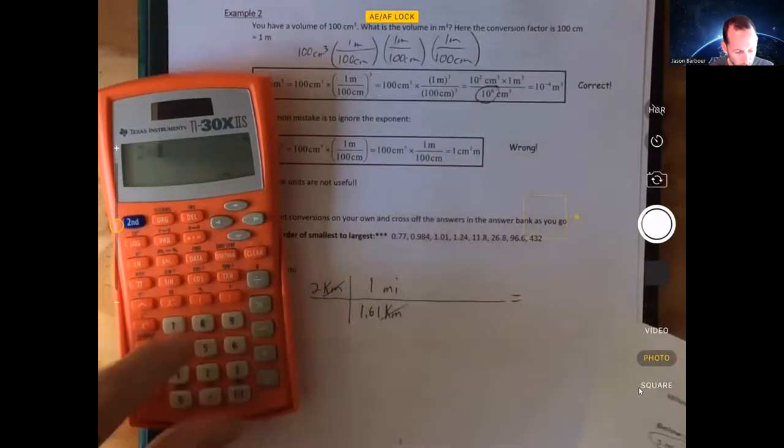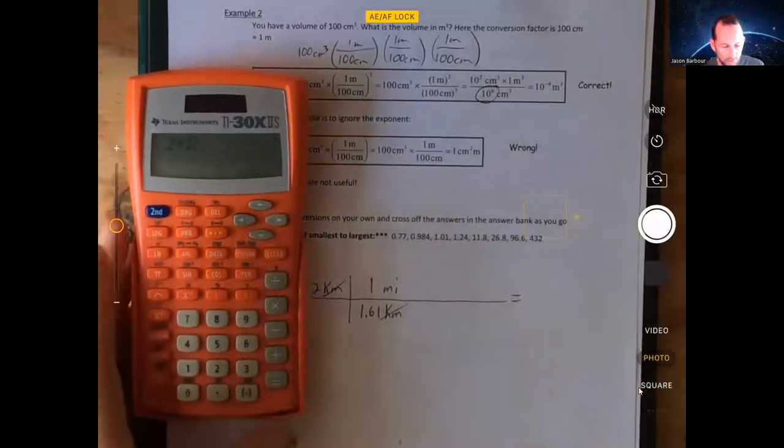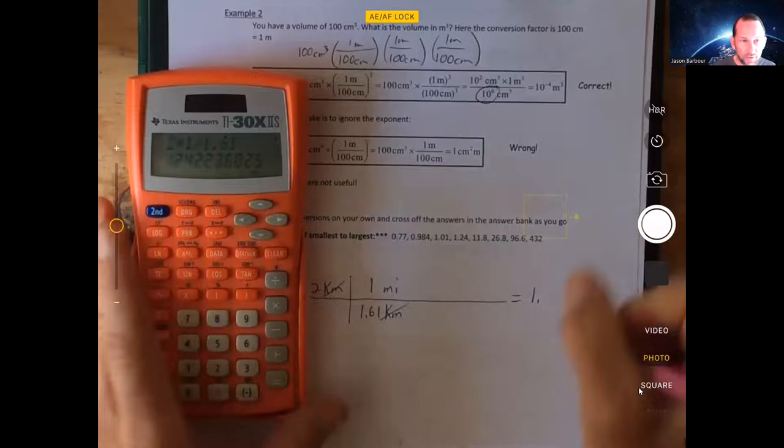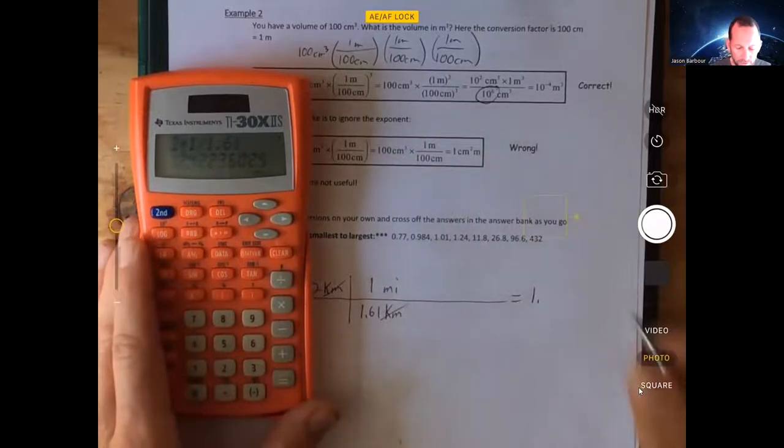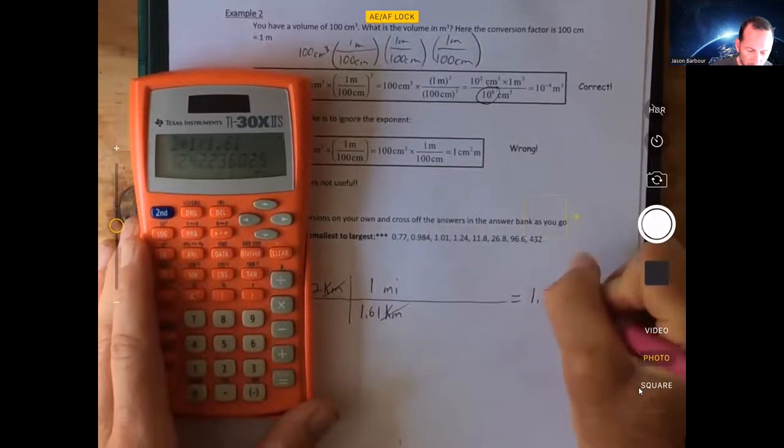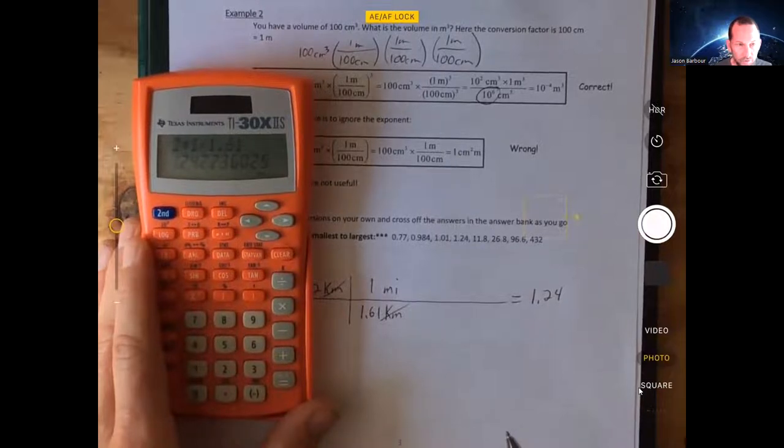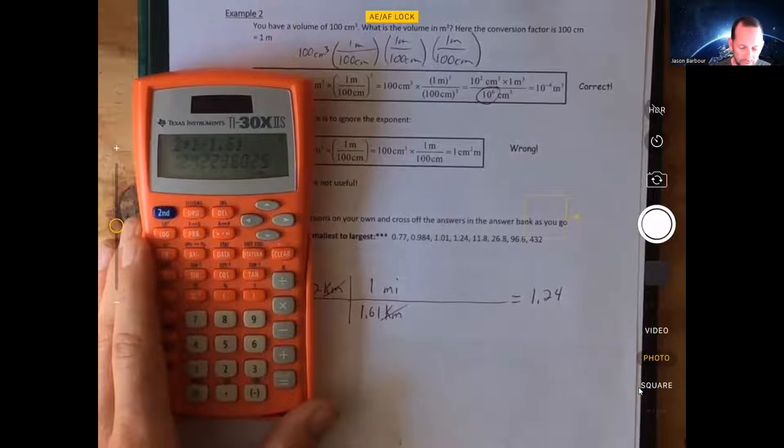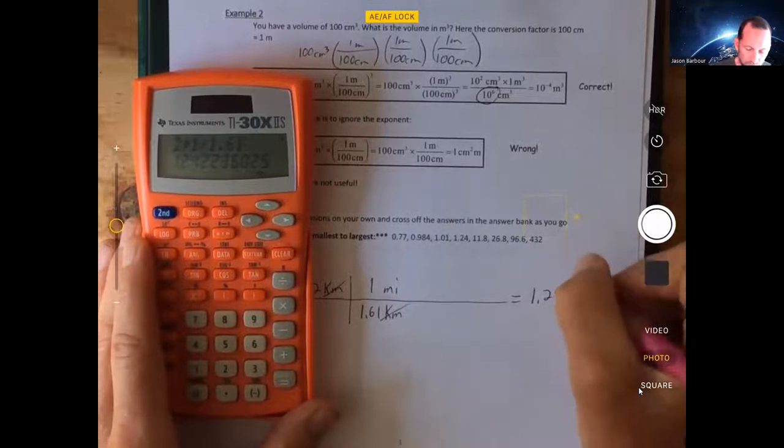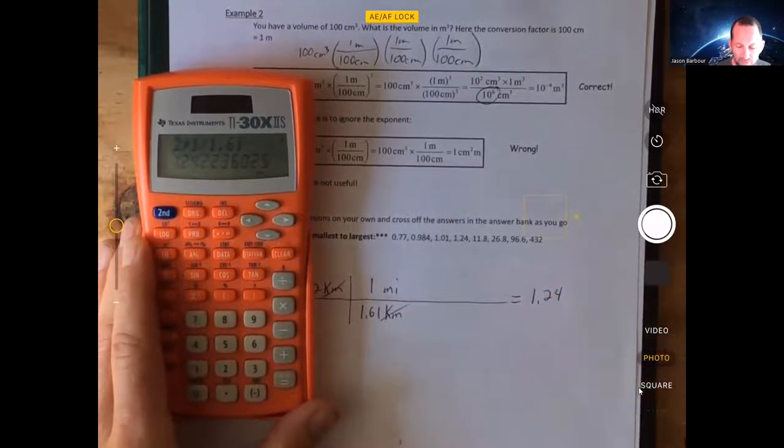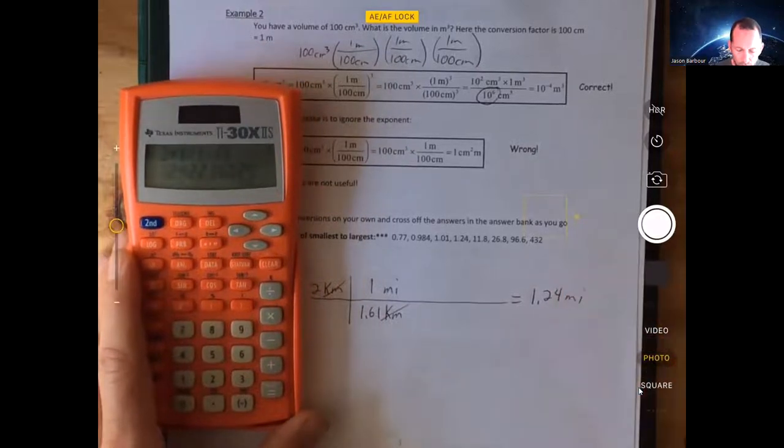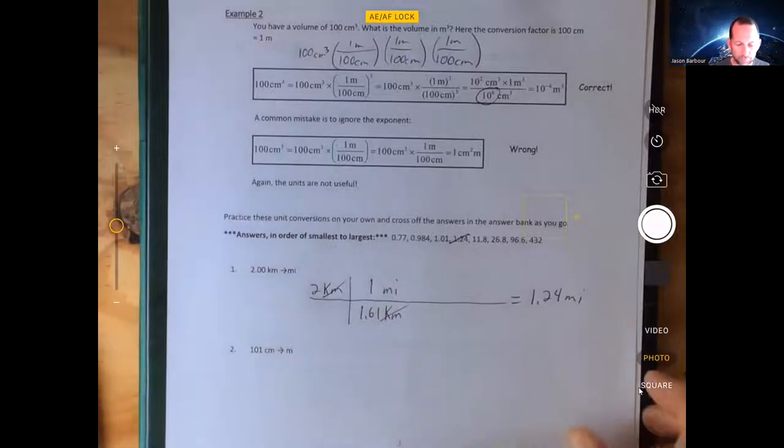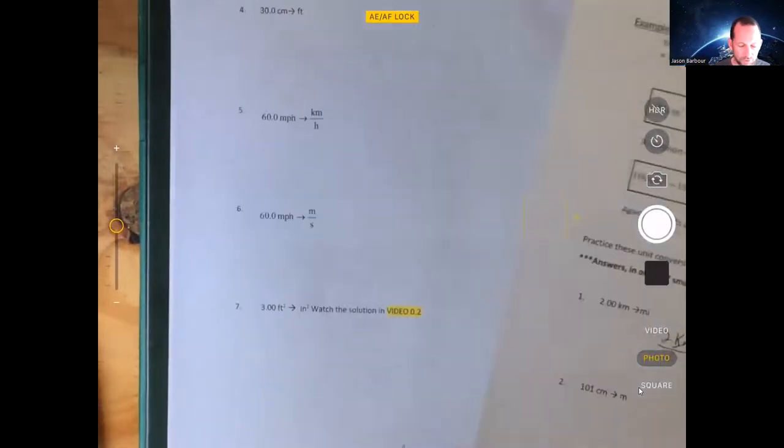Two times one, I don't really need to do the times one, but I can divide it by 1.61, and that equals 1.242236025. For this course, what I want you to do is always write down three digits, not including zeros like if it's 0.00053 something. Don't include all those zeros that come to the beginning, but three digits, not three decimal places, but three digits. So 1.24. I see that one there in my answer bank, so I can go ahead and cross that one out. That gives you an idea on how to do unit conversions.